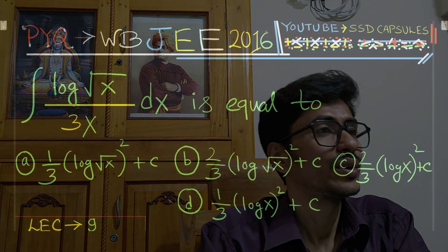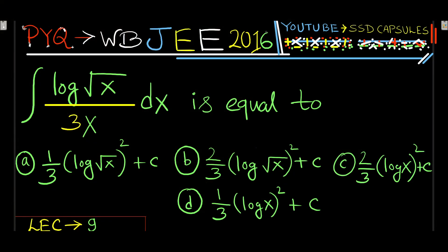Welcome friends. Today we are going to solve a beautiful problem from the West Bengal Joint Entrance Examination 2016. Without wasting any time, let's start the solution. Here is the problem: integral of log root x by 3x dx is equal to. We have to choose the correct option.